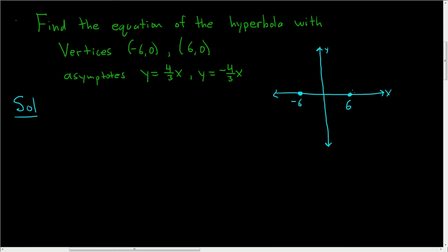The hyperbola passes through the vertices, so this will open right and left. So we have a hyperbola that opens left and right. The center is right in the middle, so in this case the center is 0, 0.